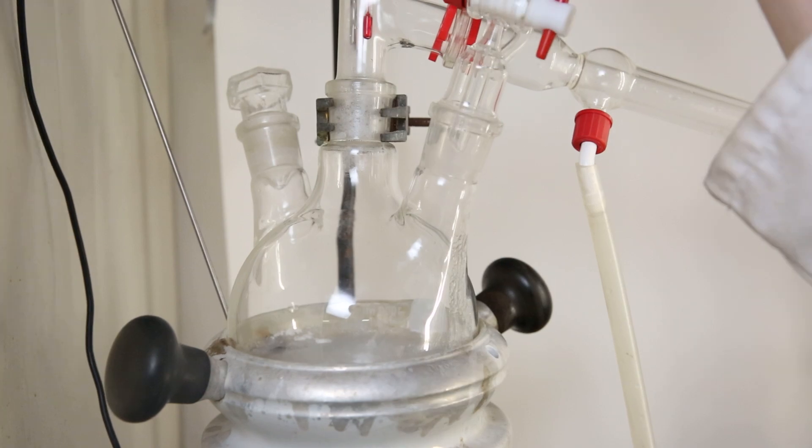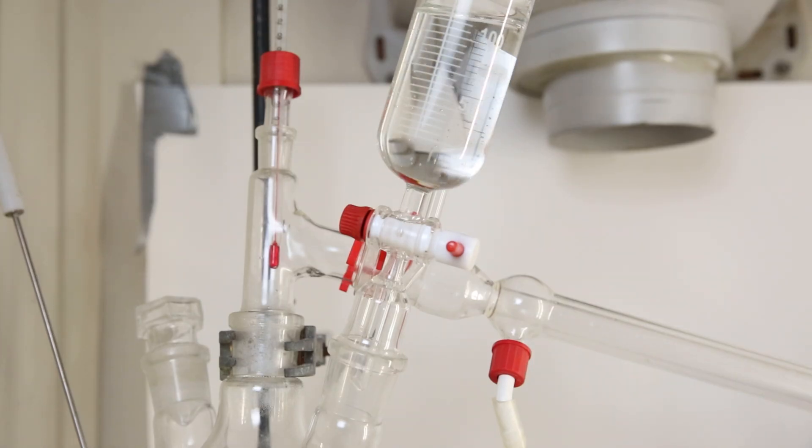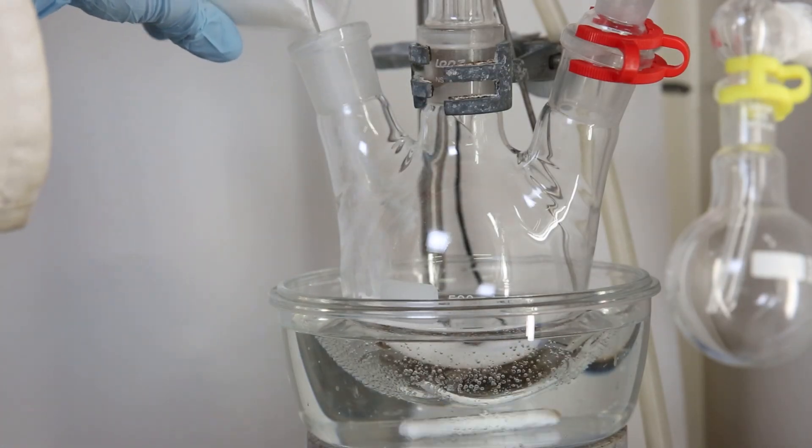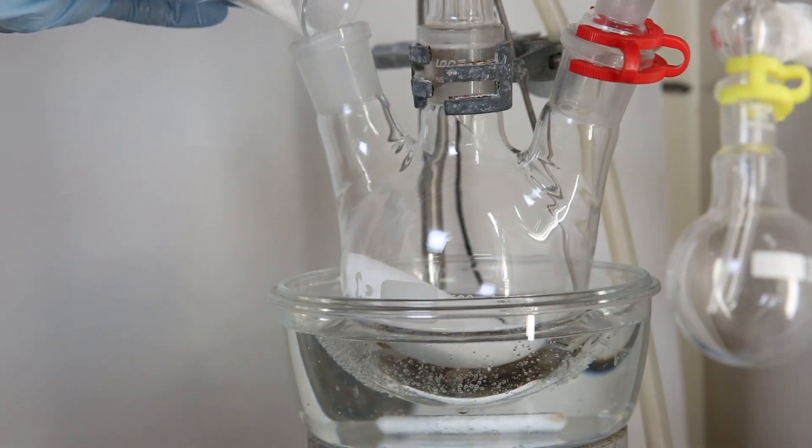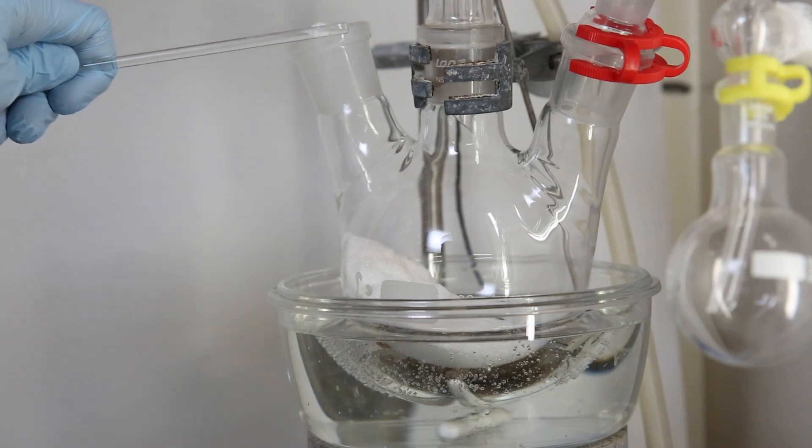Then I attach an addition funnel and fill it with 300g of glycerol. To the first receiving flask, I add 150g of sodium chloride and on top of that I add 5g of hydroquinone, which will hopefully reduce polymerization of the Acrolein.